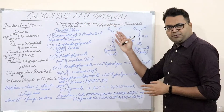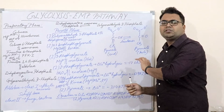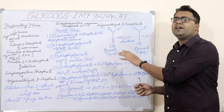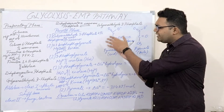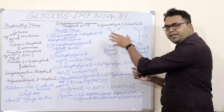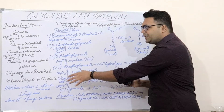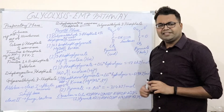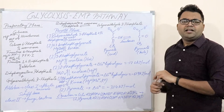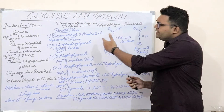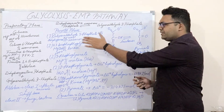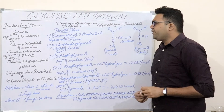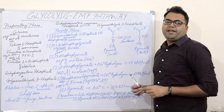The EMP pathway is one of the most conserved pathways — it occurs in almost all prokaryotes and in the eukaryotic system, as shown on this whiteboard with all these steps and specific enzymes. Now, the glycolytic process is divided mainly into two parts: number one is the preparatory phase, and number two is the payoff phase.